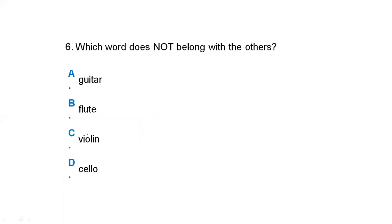Which word does not belong with the others? Here, different musical instruments are given — option A is guitar, option B is flute, option C is violin, and option D is cello. Guitar, violin, and cello are all string instruments. Flute is the odd one out as it is a wind/breathing instrument. So our correct answer is flute, option B.